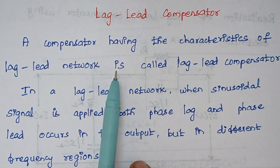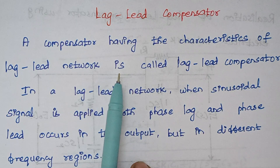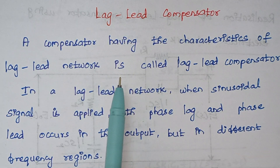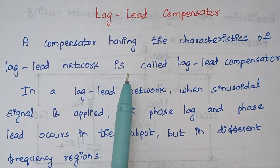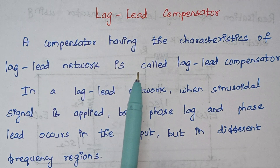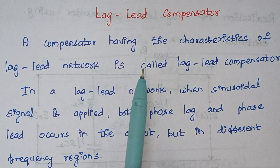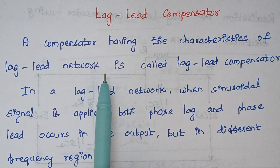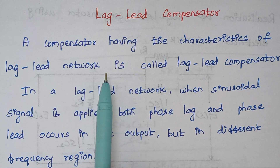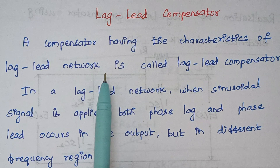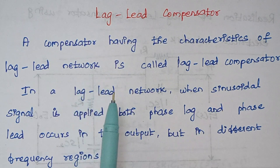What is meant by a lag network? When we give an input, if the output lags with respect to the input, then that is known as a lag network. In a lead network, we give a sinusoidal input wave, and the output of the lead network leads the input by some angle — that is known as a lead network.